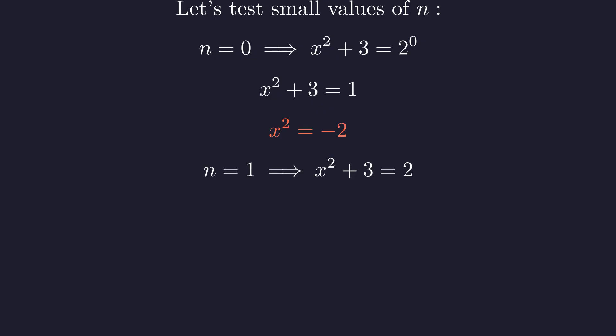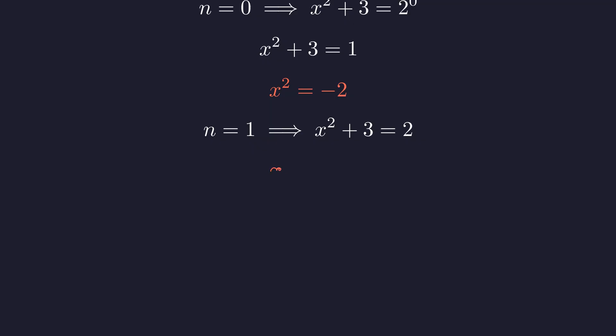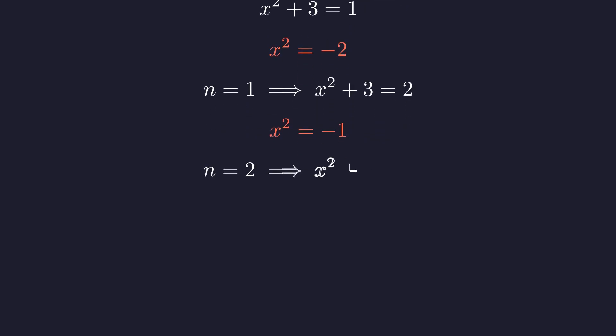If n is 1, x squared plus 3 equals 2. Subtracting 3 gives x squared equals negative 1. There's no real solution, let alone an integer one. If n is 2, x squared plus 3 equals 4.